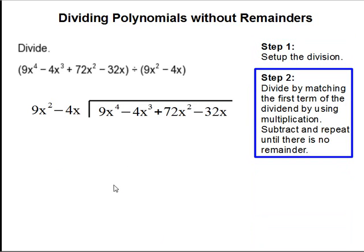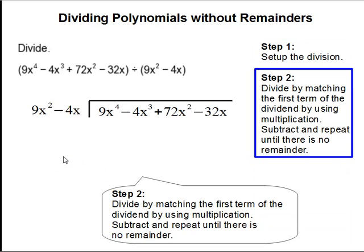Step two, divide by matching the first term of the dividend by using multiplication. Subtract and repeat until there's no remainder.